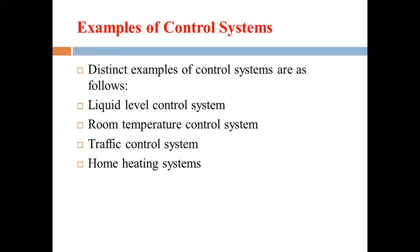Considering the basic classification and comparison of control systems: in open loop there is no feedback path, whereas in closed loop there is. In open loop there is no error detector, but in closed loop an error detector exists. The open loop system is inaccurate whereas the closed loop system must be accurate. The open loop system is highly sensitive to parameter changes, while the closed loop system is less sensitive. The open loop system is more economical compared to the closed loop system. Thank you.